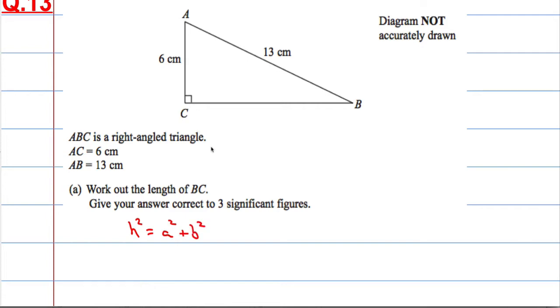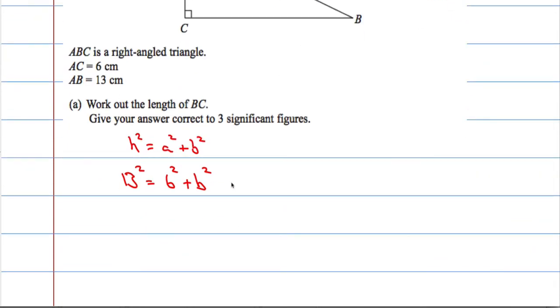In this case, 13 squared should equal 6 squared plus B squared. 13 squared is 169. 6 squared is 36 plus B squared.